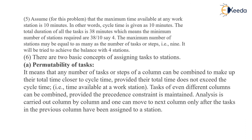Assume that the maximum time availability at any workstation is 10 minutes — in other words, the cycle time is given as 10 minutes. The total duration of all tasks is 38 minutes. This means the minimum number of stations required is 38 divided by 10, which equals 3.8, rounded up to 4. The maximum number of stations may be as many as the number of steps, that is 9. We will try to achieve the balance with 4 stations.